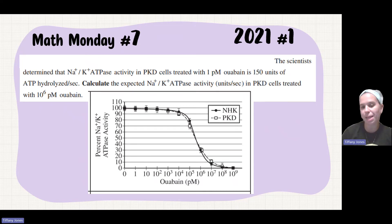Calculate the expected sodium potassium ATPase activity in units per second in PKD cells treated with 10 to the 6 picomoles of the certain chemical.